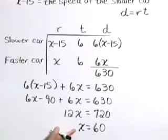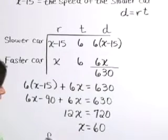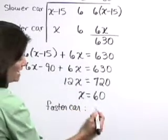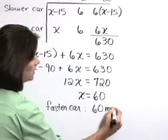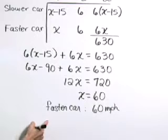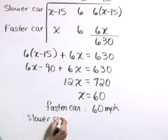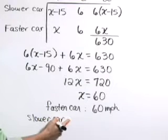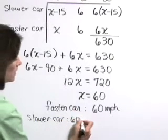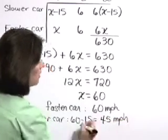Now recall that we let x represent the speed of the faster car. So let's say then that that faster car has a rate or speed of 60 miles per hour. We want to find the rate or speed of both cars. So let's find then the speed of the slower car. We're told that its rate is x minus 15 or 60 minus 15. That's 45 miles per hour.